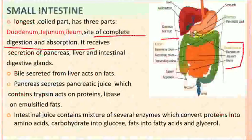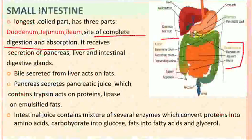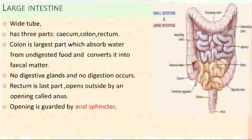The chyme then passes to the small intestine. The small intestine is the longest coiled part with three sections: duodenum, jejunum, and ileum. It is the site of complete digestion and absorption. It receives secretions from the pancreas and liver, and possesses a number of digestive glands. Bile secreted from the liver acts on fat; the pancreas secretes pancreatic juice containing trypsin, which acts on protein, and lipase, which acts on emulsified fat. Intestinal juice contains enzymes which convert proteins into amino acids, carbohydrates into glucose, and fats into fatty acids and glycerol, because food must be broken down into smaller molecules to be absorbed.